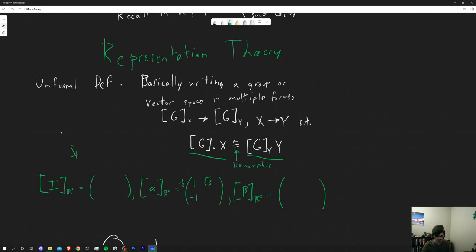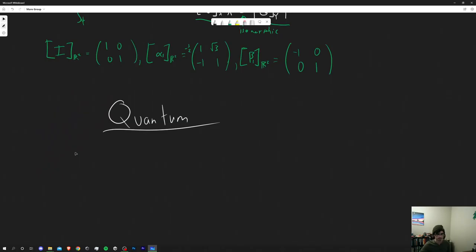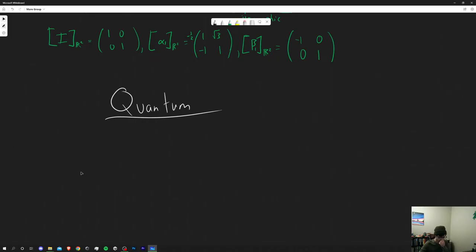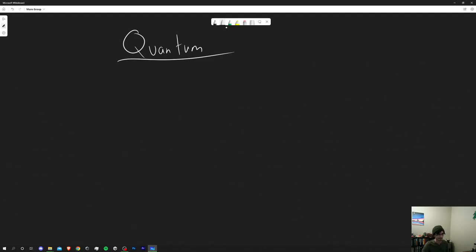Alpha 1 should be negative negative one half in front times one root three negative one and one. Beta let's just call this beta one and alpha beta equal to negative one zero zero one because it's reflecting the x. And then the identity is of course is the identity.